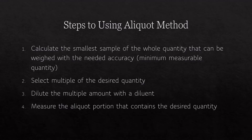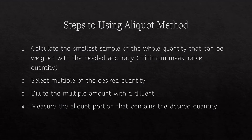Steps to using the aliquot method: Step one, find the minimum weighable quantity by calculating the smallest sample of the whole quantity that can be weighed with the needed accuracy. Step two, select the multiple of the desired quantity. Step three, dilute the multiple with a diluent. Step four, measure the aliquot portion that contains the desired quantity.